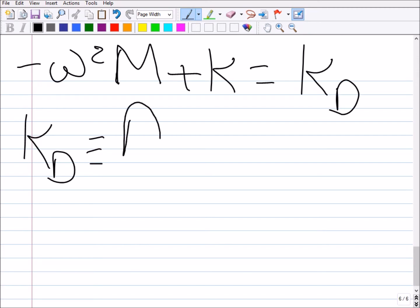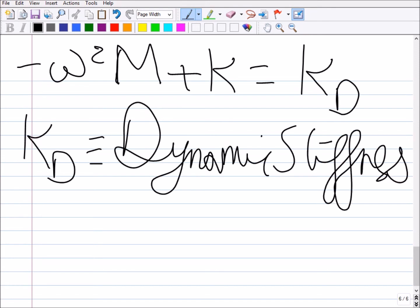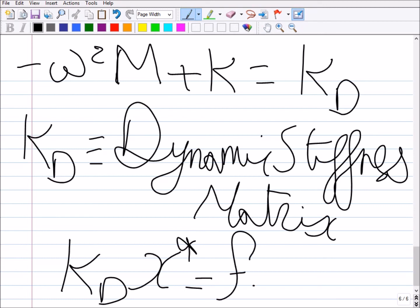So we actually call this matrix the dynamic stiffness matrix. Let me rewrite this. So we call -ω²M + K, we call this Kd, where Kd is the dynamic stiffness matrix. So the above equation can be written as Kd x* equals F₀, or you can write that x* equals Kd⁻¹ times F₀.